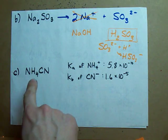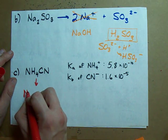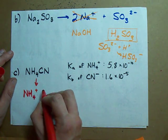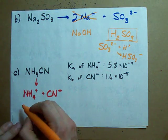We can do the same for this. NH4CN breaks up into NH4+ and CN-. Will either of these affect pH?